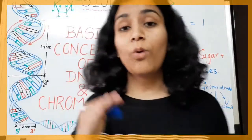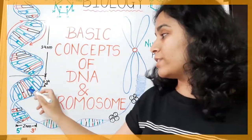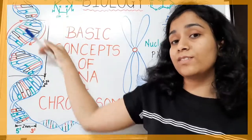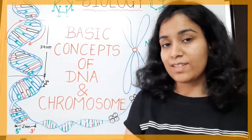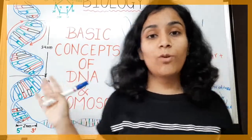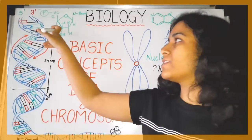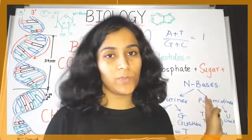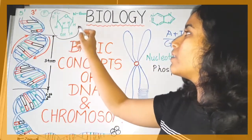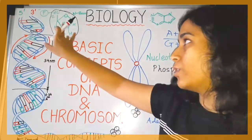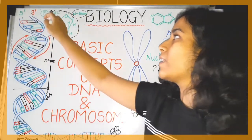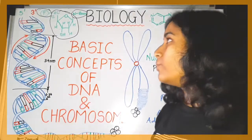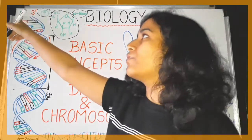The nitrogen base pairs form the rungs of the DNA ladder. The colorful coded elements are the nitrogen base pairs — the rungs — and the backbone, shown as a blue strip, is formed by deoxyribose sugar. A nucleotide consists of deoxyribose sugar, a nitrogen base, and a phosphate group. The phosphate group is always at the 5' end, and at the 3' end there is always an OH group.